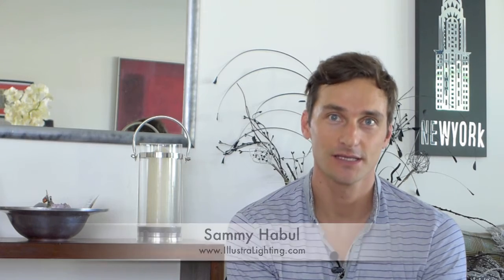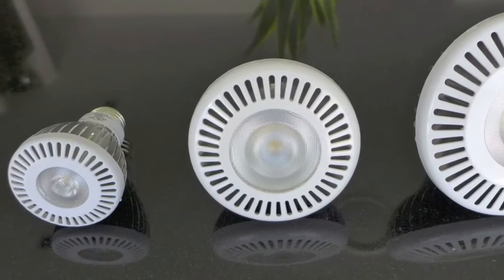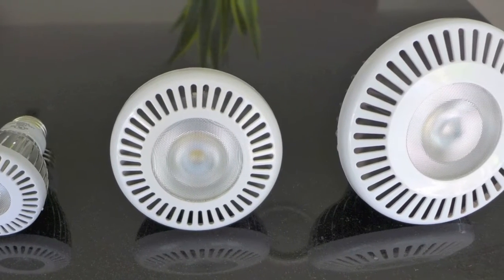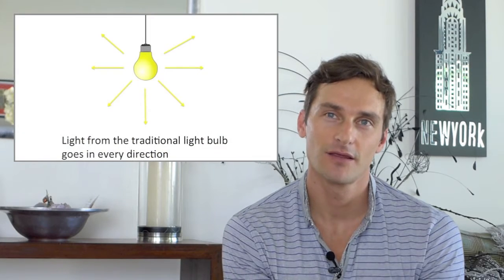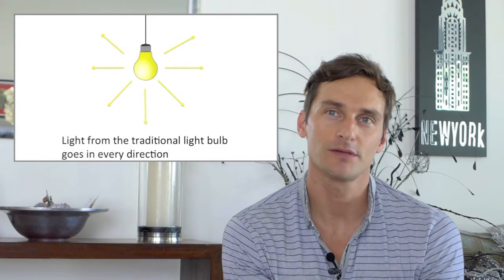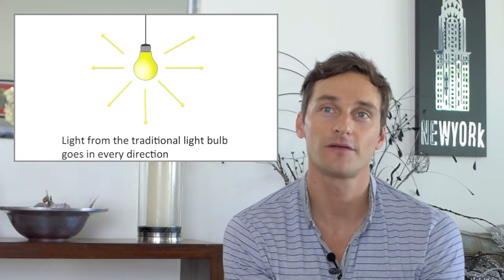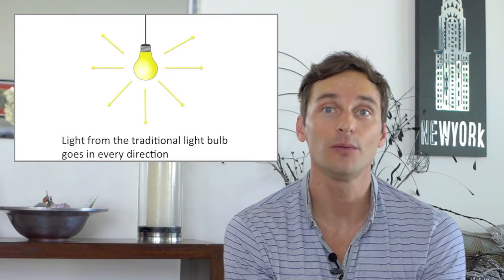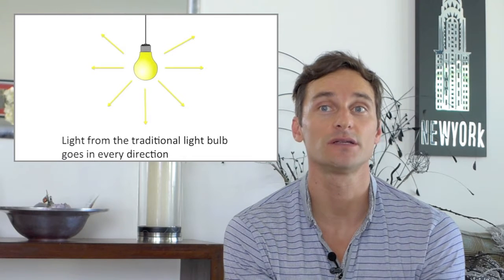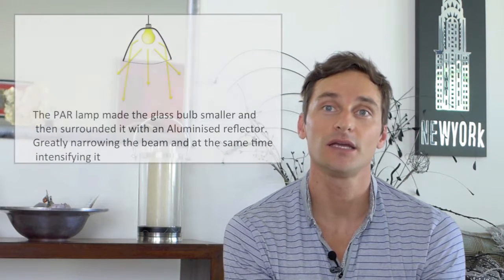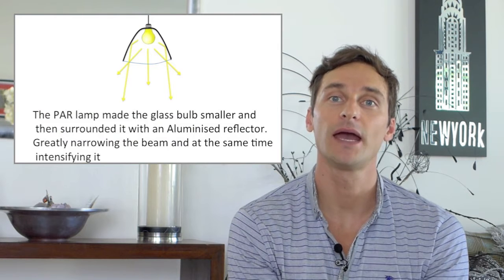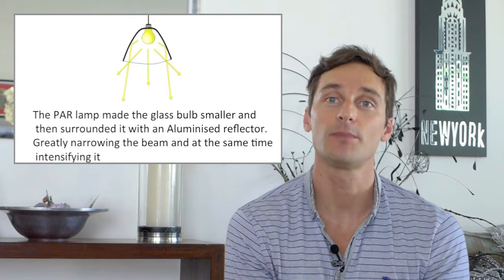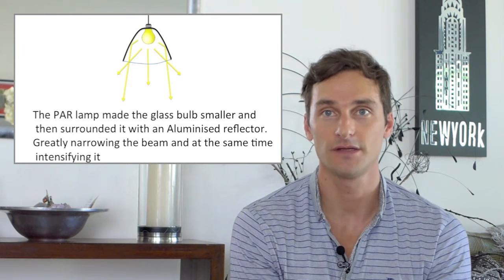Hi everyone. Today we're talking about PAR lamps. The invention of PAR lamps came about because the simple light bulb shed its light in all directions. The thought of being able to focus light from a bulb into a narrow beam was a revolution at the time. Focusing the light increased light intensity and also means a light bulb can direct its light beam across further distances.